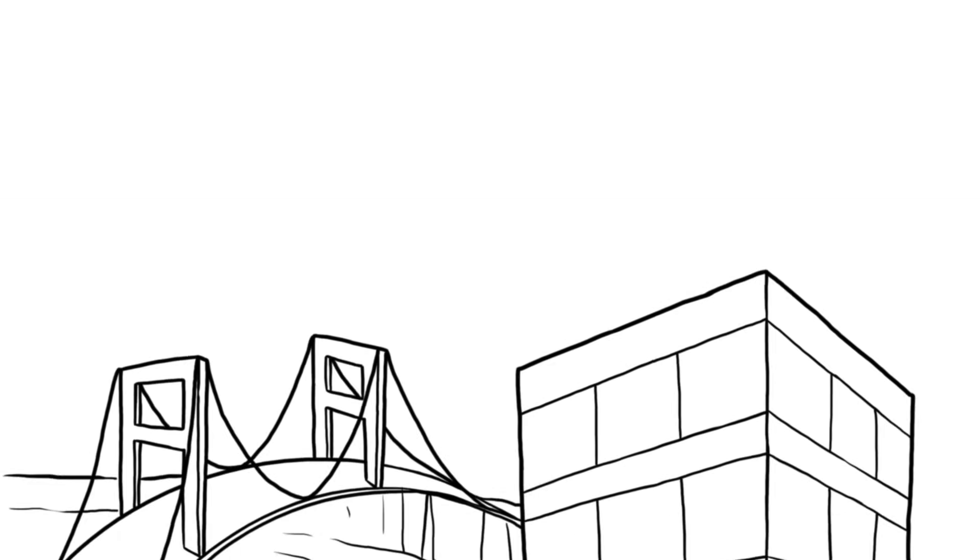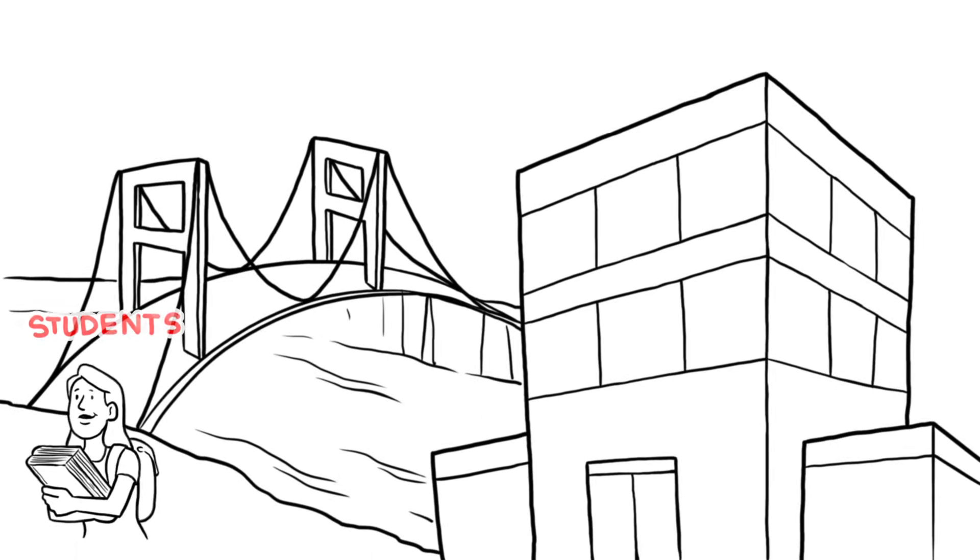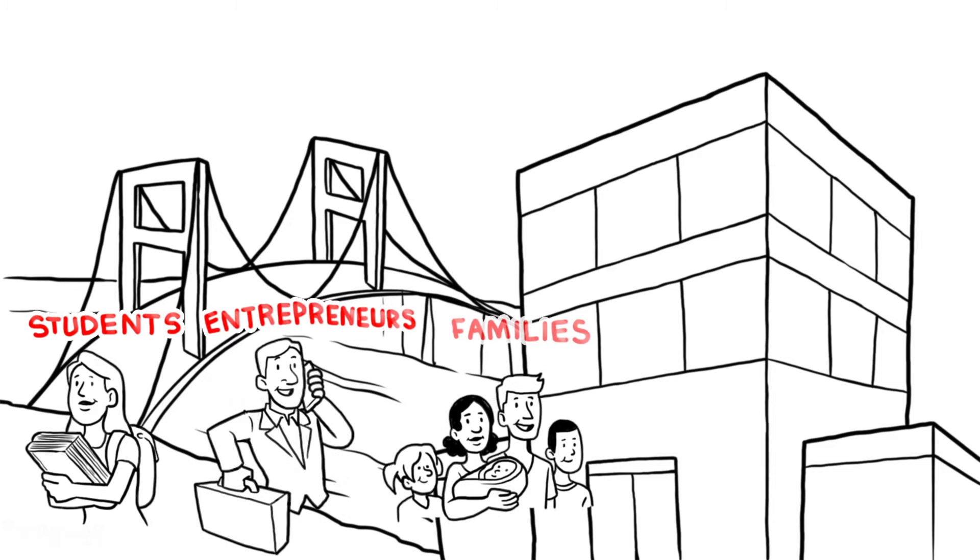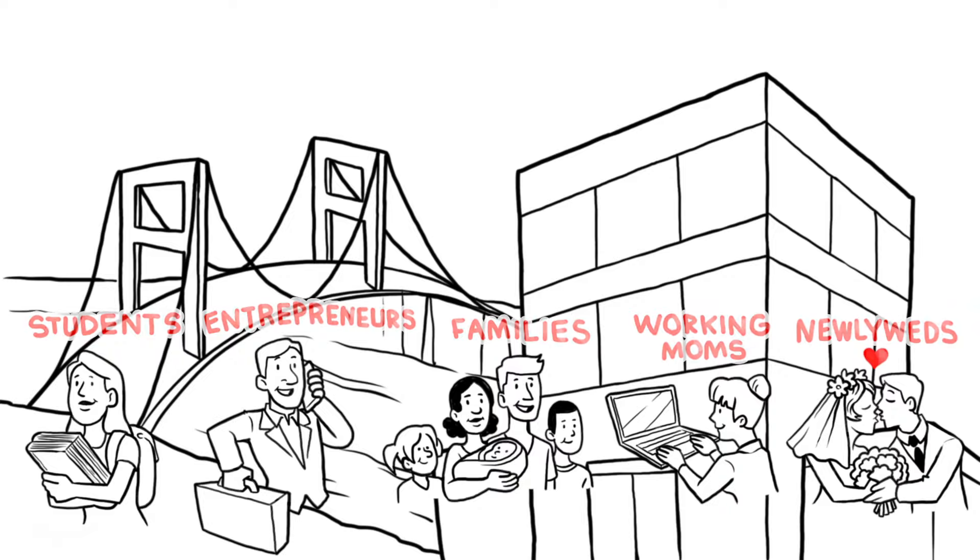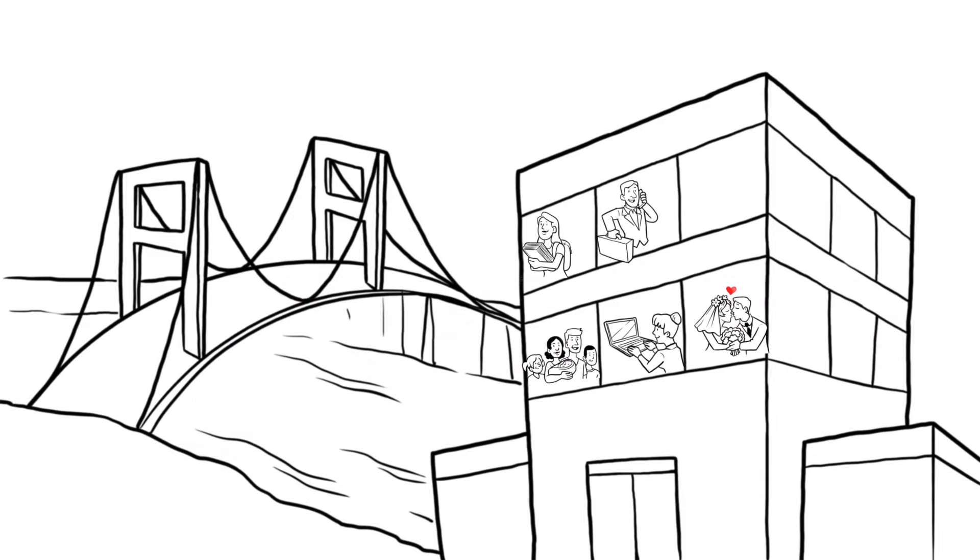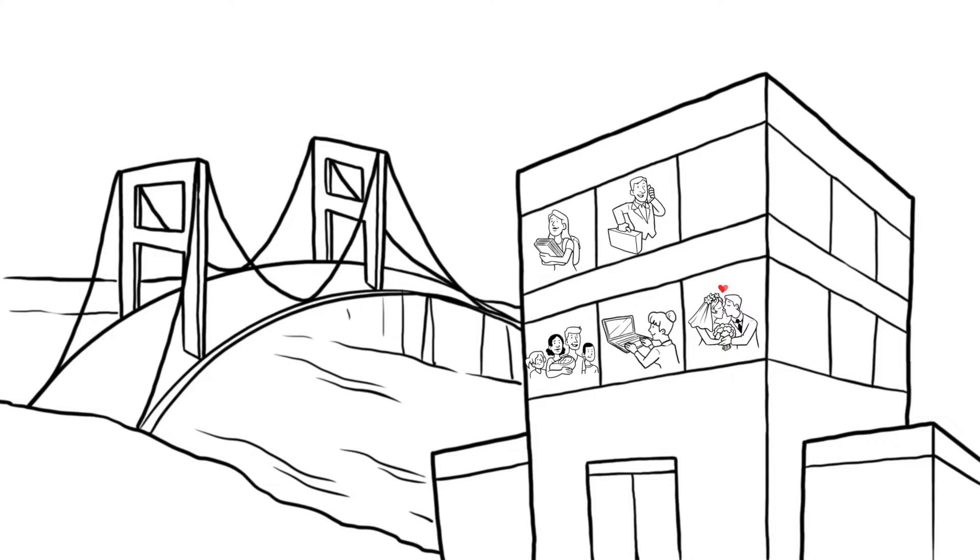How can a fiber provider deploy a high-speed fiber program to equip the students, entrepreneurs, families of five, working mothers, newlyweds residing, working, creating, studying, progressing in multi-dwelling units of a major city with a connection of 1,000 megabits per second?